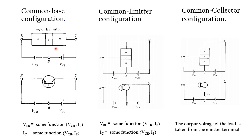Here is a representation for an NPN transistor in common base configuration, common emitter configuration, and common collector configuration. For the common collector configuration, the output voltage across the load is taken from the emitter terminal. These figures illustrate that the configurations are identical for low frequency and high frequency transistors.